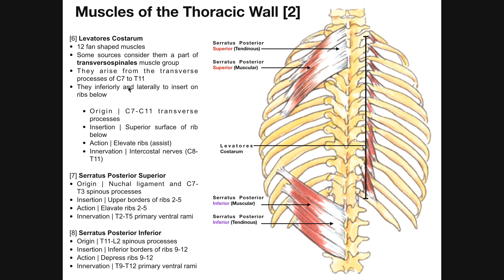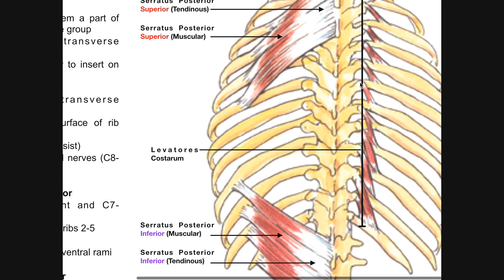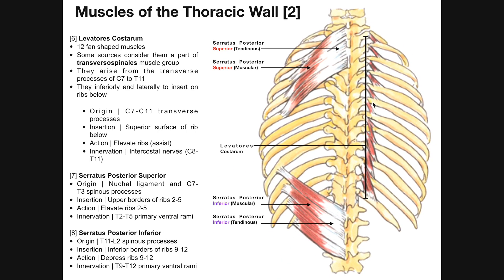These muscles arise from the transverse processes of C7 all the way down to T11. The fibers project inferiorly and laterally to insert on the ribs. We can see that they originate on the transverse process of the vertebra and then project downward and laterally to insert on the ribs. Their origin is on the C7 through T11 transverse processes, and their insertion is on the superior surface of the rib below. Their action is to elevate the ribs — which makes sense because their name, levatores, means to elevate.